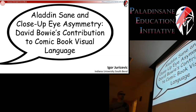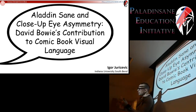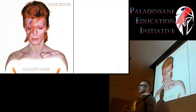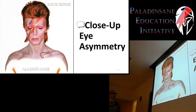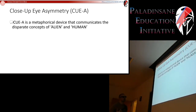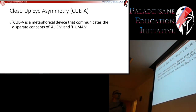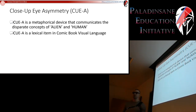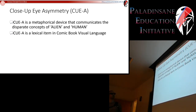This is 'Aladdin Sane and Close-Up Eye Asymmetry: David Bowie's Contribution to Comic Book Visual Language.' We're going to learn about close-up eye asymmetry — a metaphor used in visual language. In this paper we're going to argue: number one, close-up eye asymmetry (CEA) is a metaphorical device that communicates two different ideas — the alien and the human; and number two, CEA is a lexical item in comic book visual language.